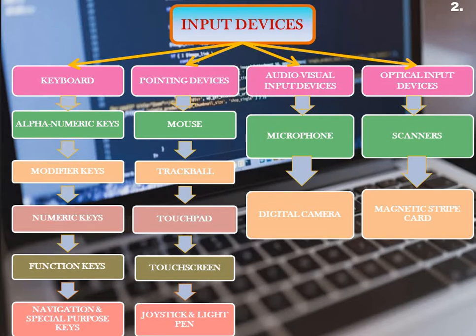Input devices are basically a part of hardware. Anything given to the computer for processing or storage is called input — data and instructions are given to the computer as input. The devices used to enter data and instructions into the computer are called input devices. An input device is a hardware component that takes input from the user and converts it into machine-readable or binary form that a computer can understand.